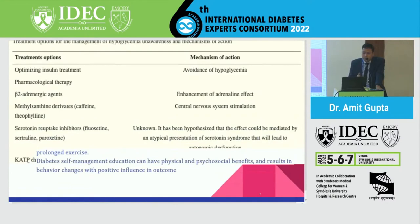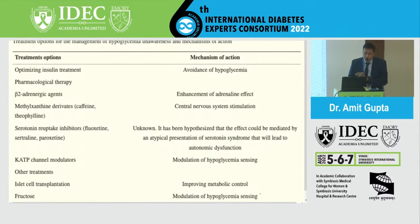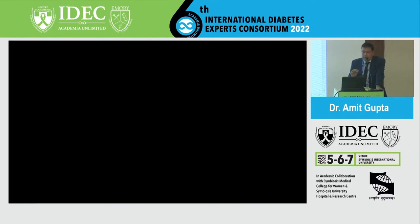Treatment options for hypoglycemic unawareness include optimizing insulin regimens and reviewing therapy in patients on sulfonylureas or hypoglycemia-prone combinations. Experimental therapies include beta-2 adrenergic agents to enhance adrenergic effect, methylxanthine derivatives such as caffeine and theophylline for CNS stimulation, serotonin reuptake inhibitors like fluoxetine and sertraline, potassium ATP channel modulators, islet cell transplantation, and fructose — none of which are currently available clinically. The two most important interventions remain patient education, early identification of hypoglycemia, and therapy modification while ensuring HbA1c does not slip.